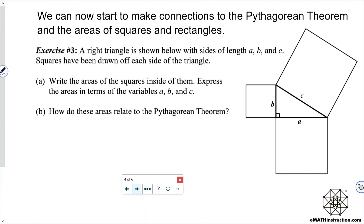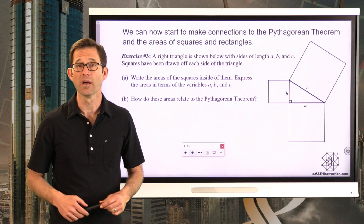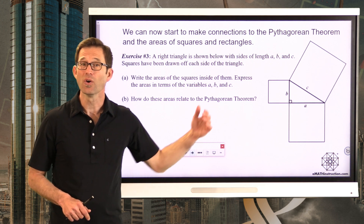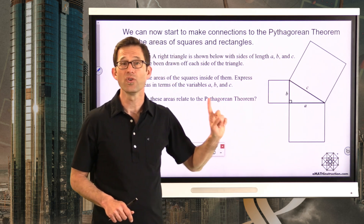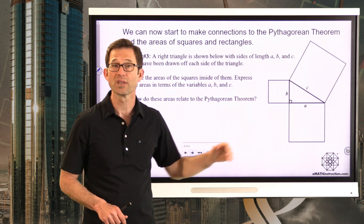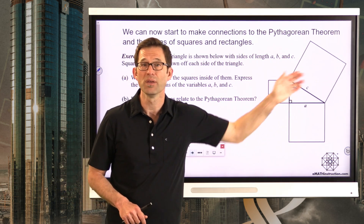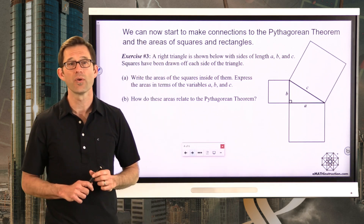A right triangle is shown below with sides of length a, b, and c. Squares have been drawn off each side of the triangle. Letter a: write the areas of the squares inside of them. Express the areas in terms of the variables a, b, and c. Inside each one of these squares, write what its area is in terms of the variables a, b, and c.